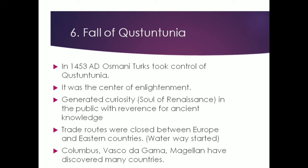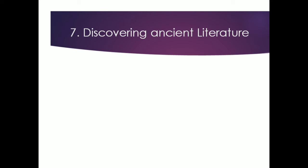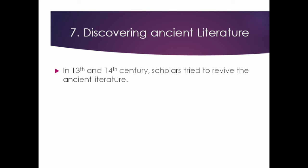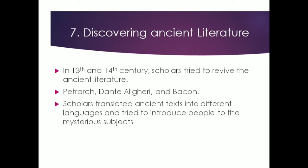Another significant effect of the decline of Constantinople was that trade routes were closed between Europe and eastern countries. The effort of reaching the eastern part by waterway thus started, and Columbus, Vasco da Gama, and Magellan discovered many countries through this activity. The seventh cause is discovering ancient literature. In the 13th and 14th centuries, scholars tried to revive ancient literature — among them Petrarch, Dante Alighieri, and Boccaccio. These scholars also translated ancient texts into different languages and introduced people to mysterious subjects.